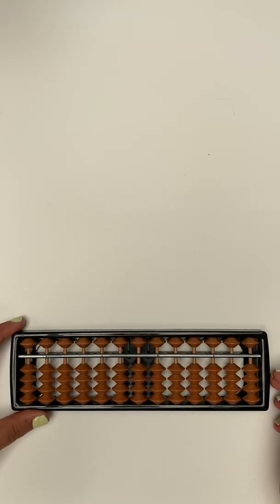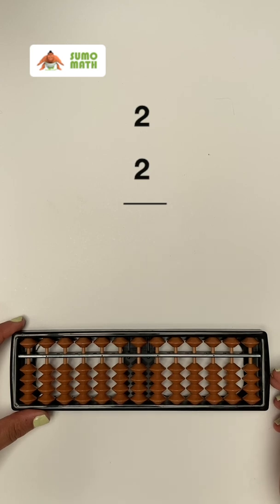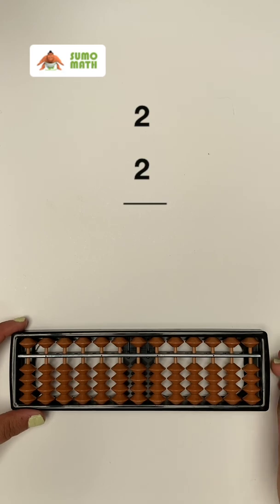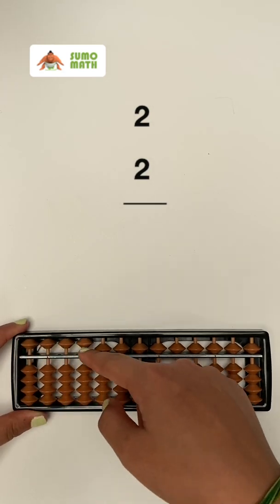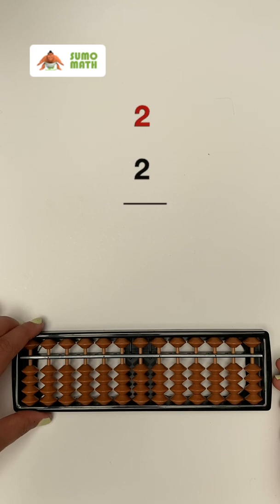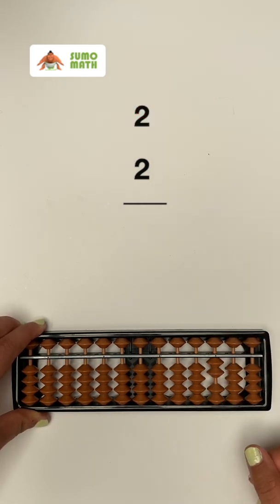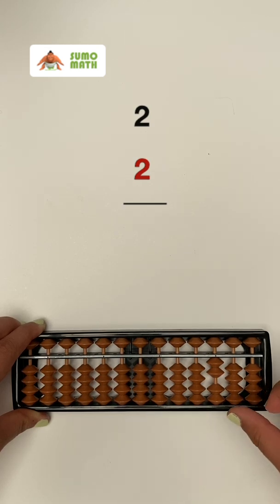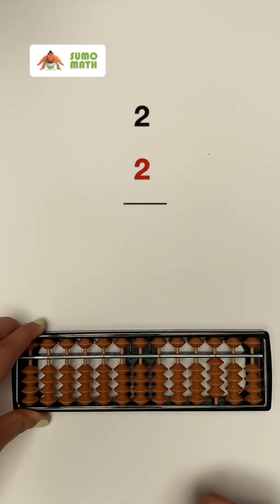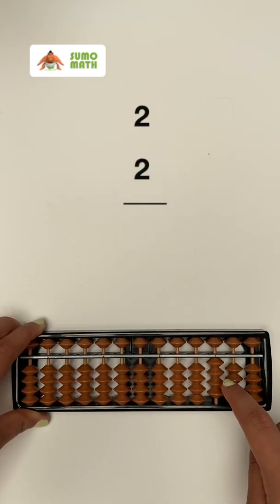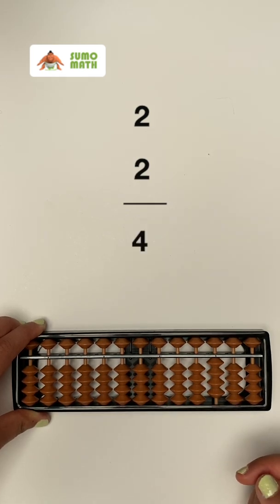So, can you add 2 plus 2 for me? Hope you got it. Let's do it together now. Start by clearing your Sorbonne, hold it with your left hand and move 2 beads up with your thumb. Then, add 2 more to it for the answer of 1, 2, 3, 4. That's right, 4.